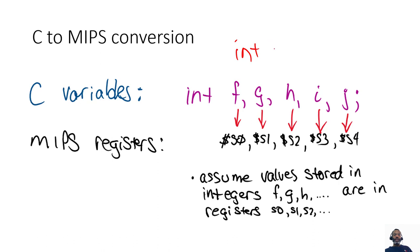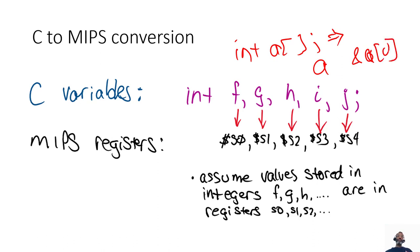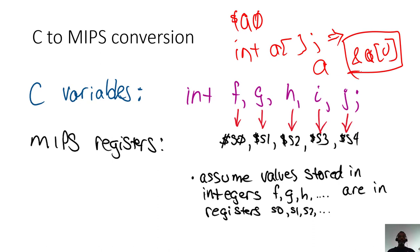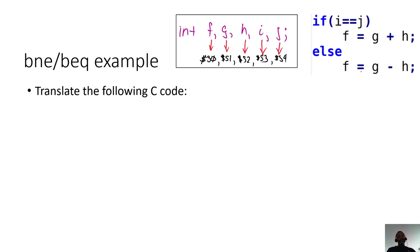One difference you'll see later is with array declarations. You can't keep an array in a single variable — the variable is a reference to the starting point of the array. So variable A refers to the address of the first element, A sub 0. Instead of using A directly, we use a register to indicate the starting address of the array, so A0 often represents the address of the first element.